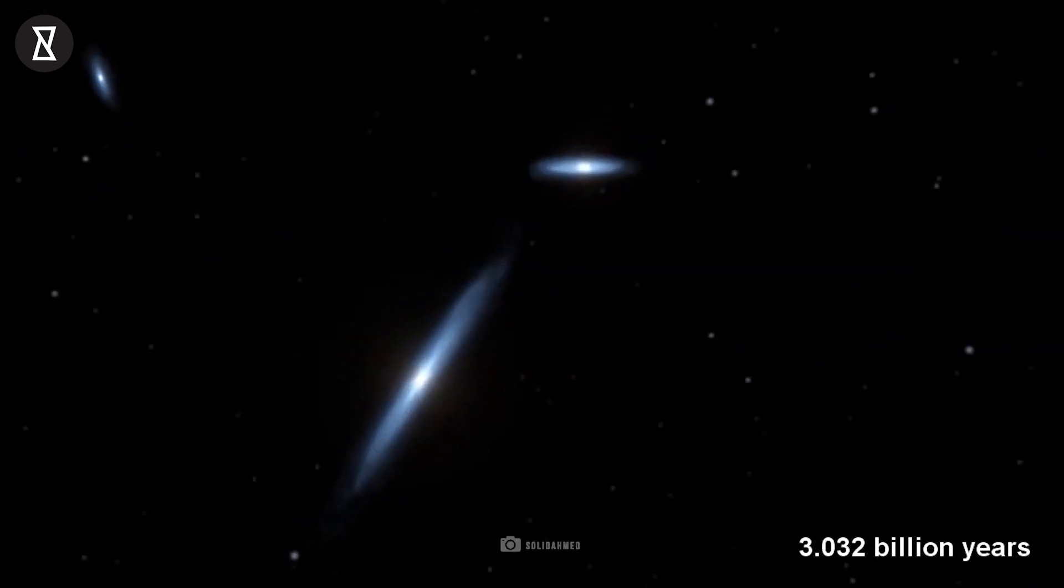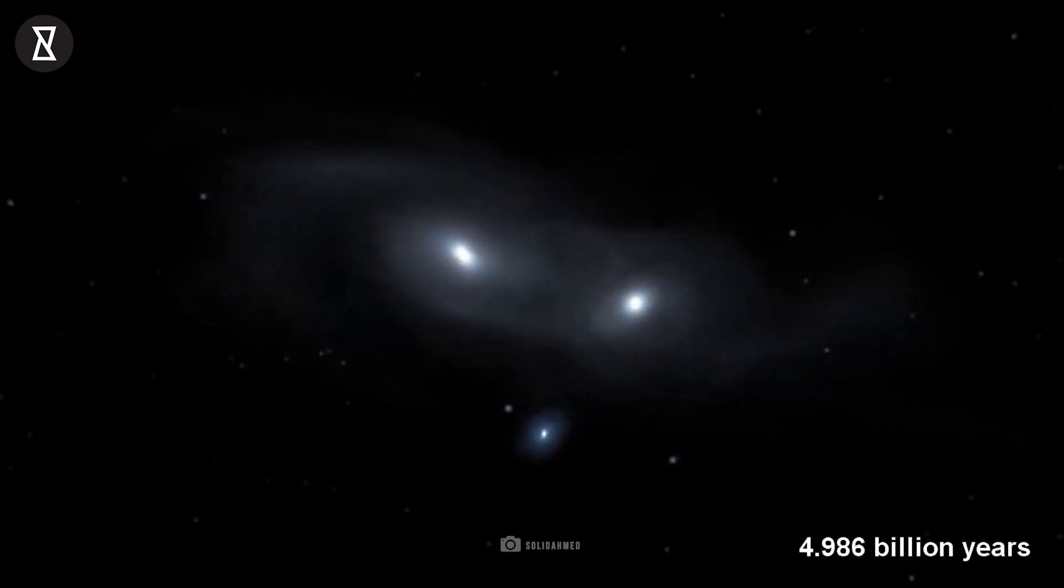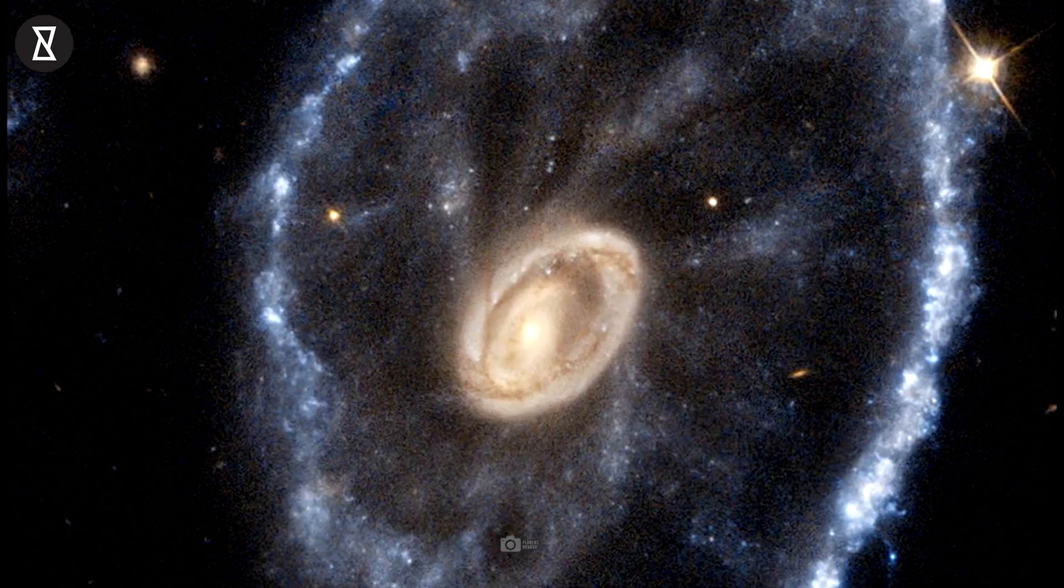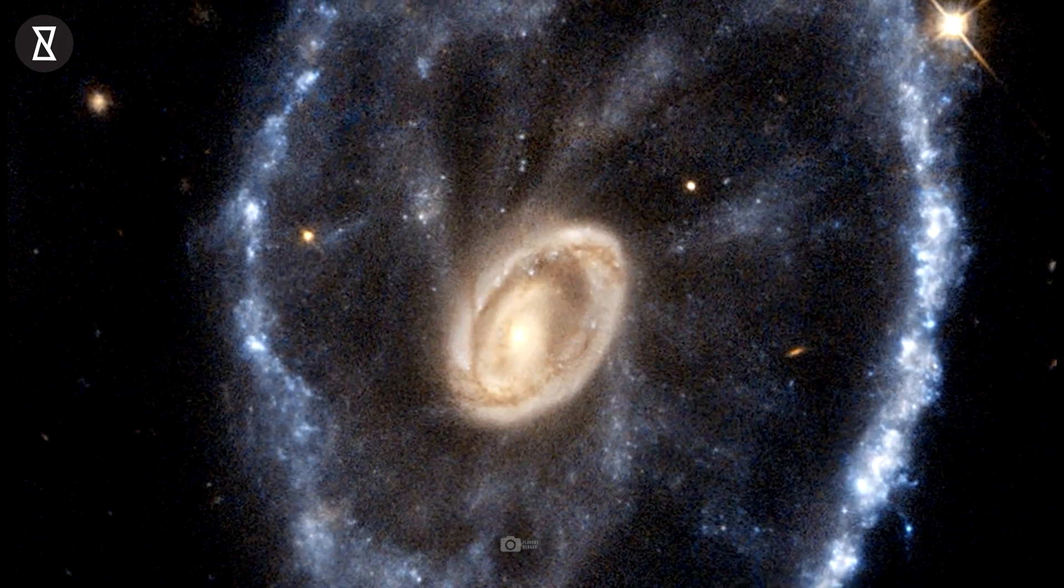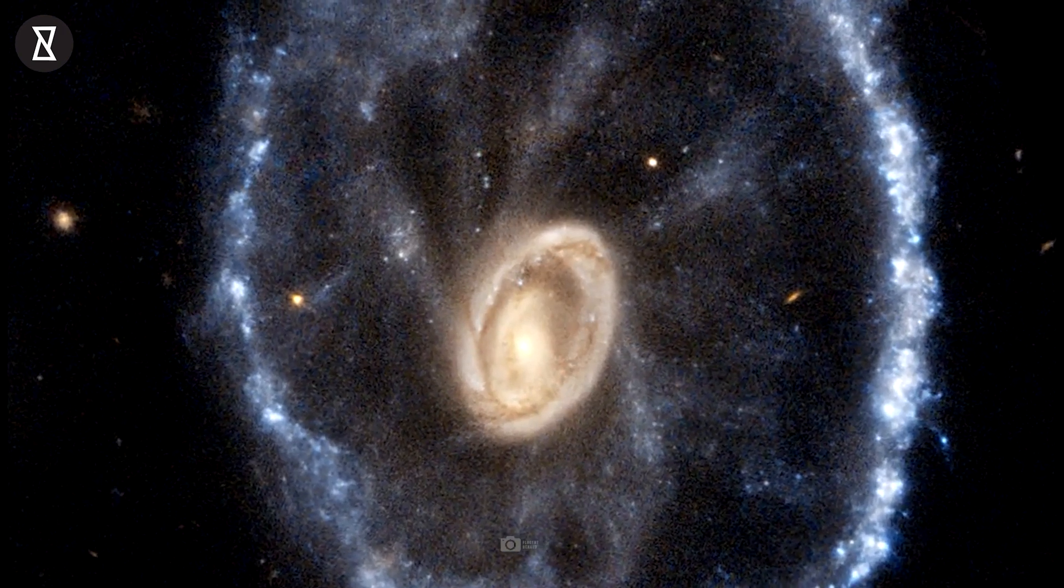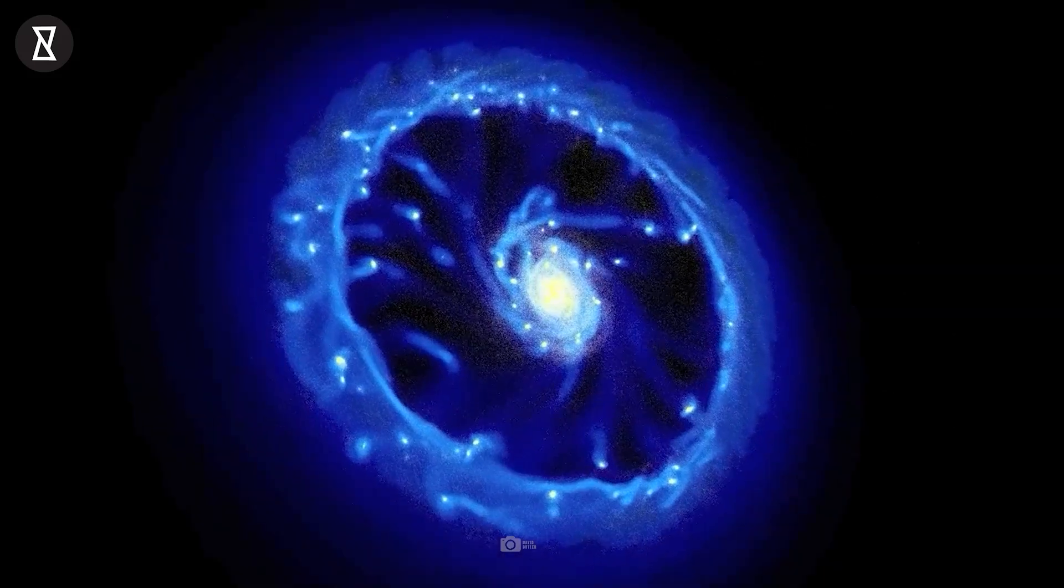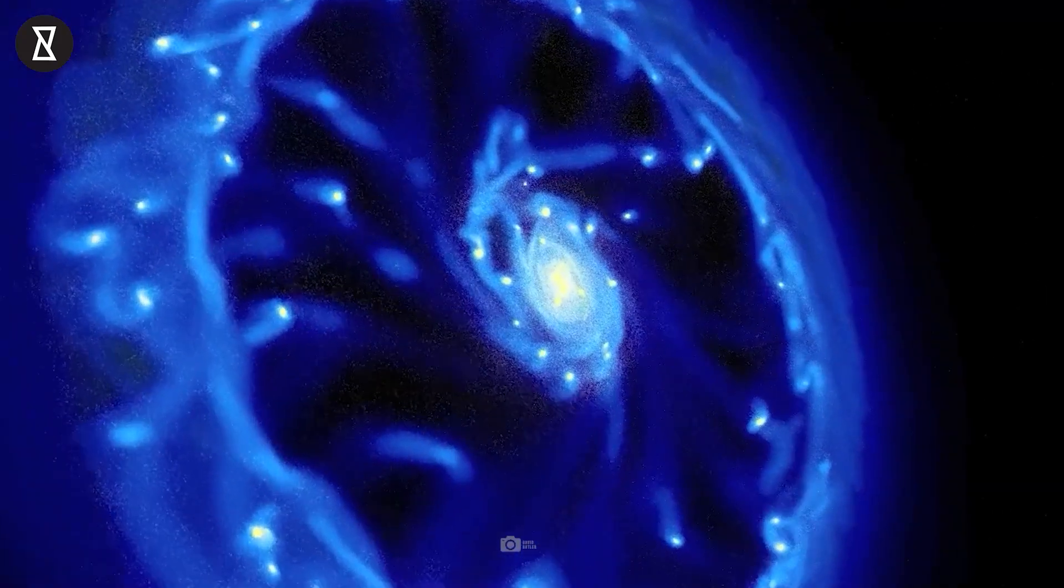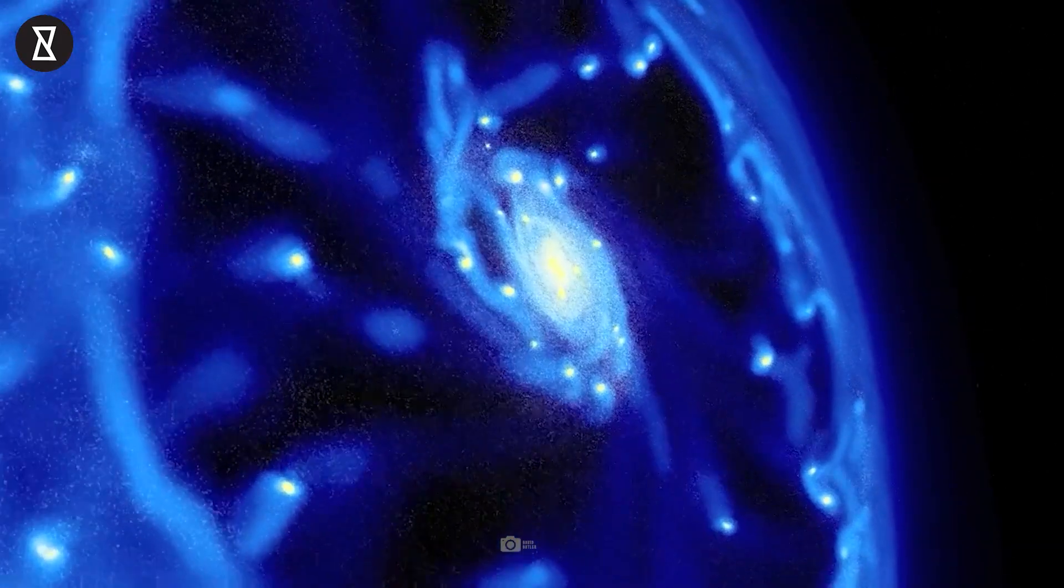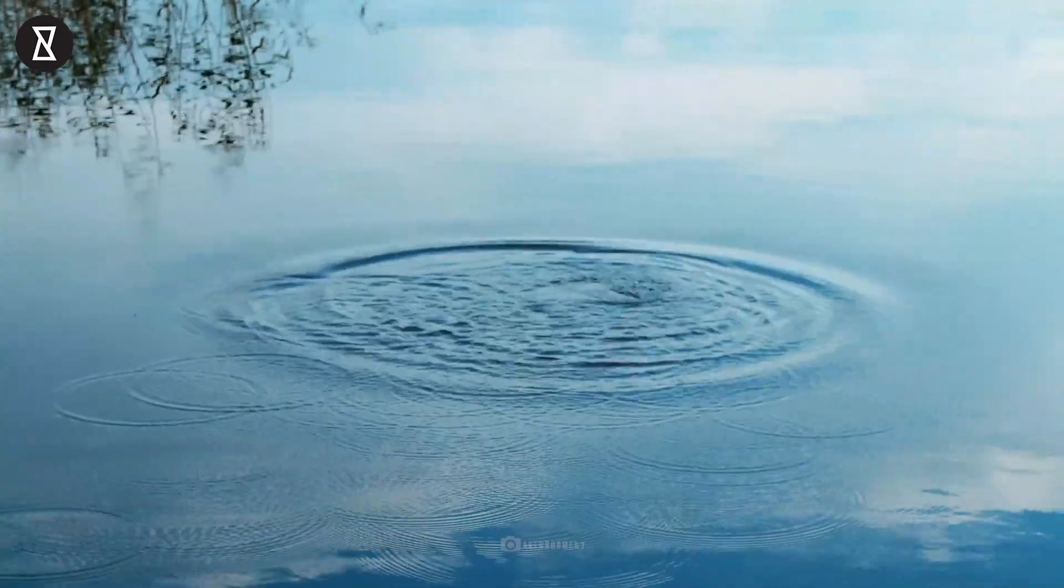Collisions of galactic proportions cause a cascade of different smaller events between the galaxies involved, and the Cartwheel is no exception. The collision most notably affected the galaxy's shape and structure. The Cartwheel Galaxy sports two rings, a bright inner ring and a surrounding colorful ring. These two rings expand outwards from the center of the collision, like ripples in a pond after a stone is tossed into it.